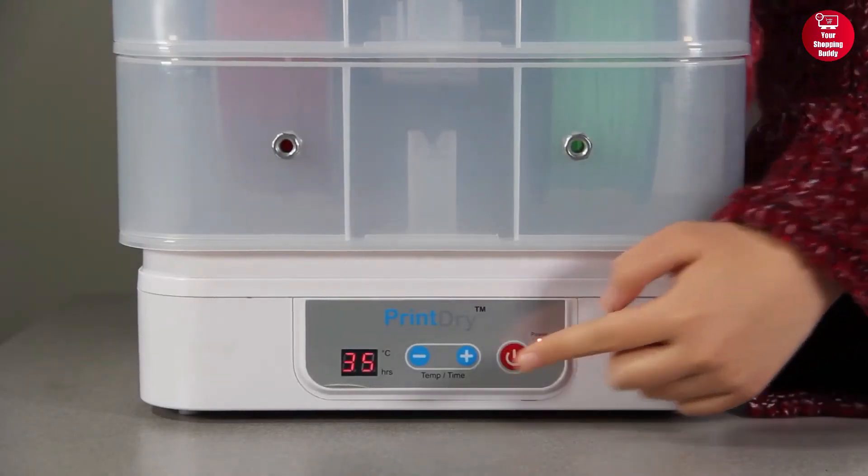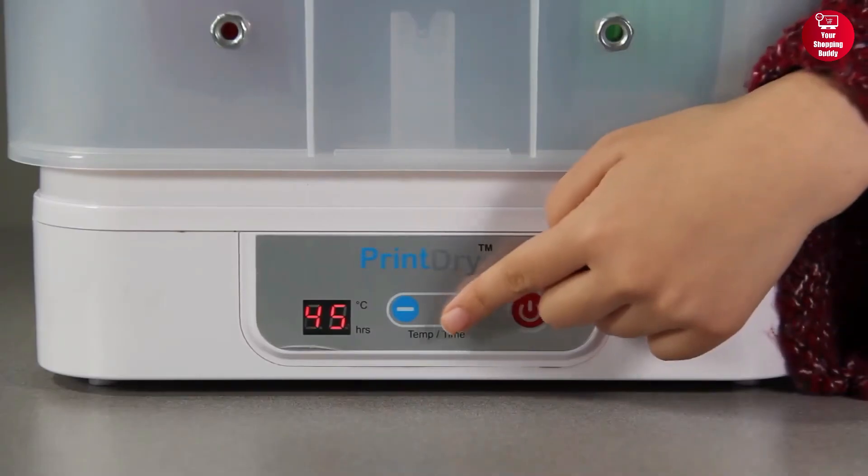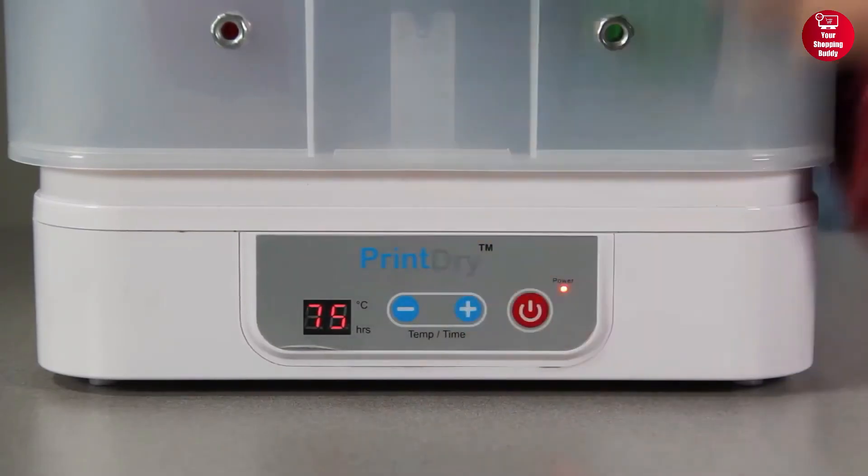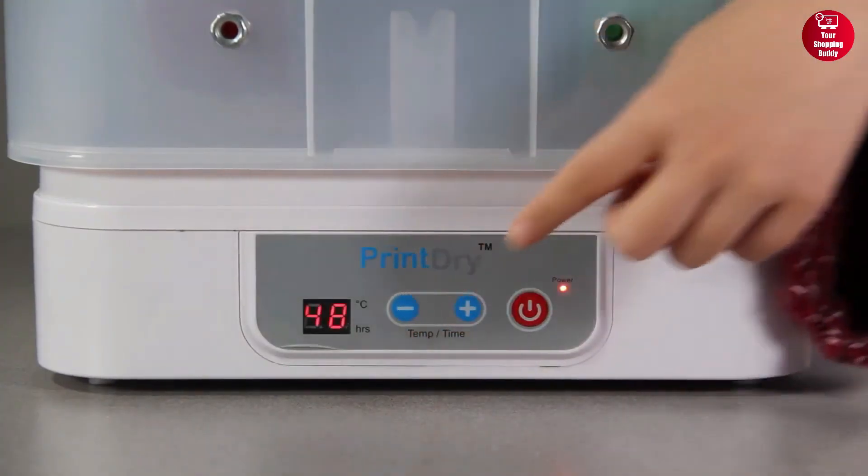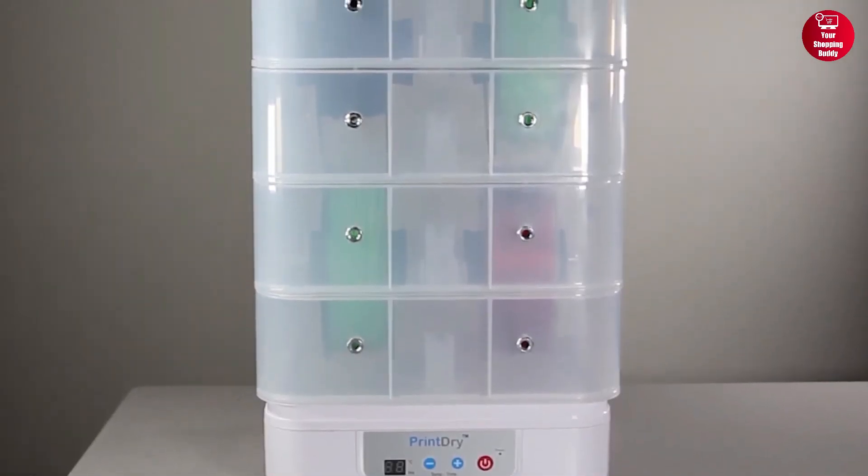It has six temperature presets ranging from 35 to 85 degrees Celsius to ensure that your filament is dried at the optimal temperature. The built-in timer has a maximum time of 48 hours and it can dry multiple spools at a time.